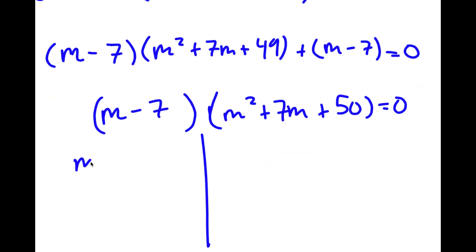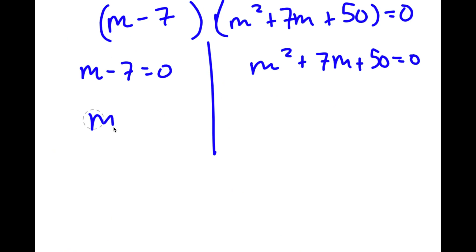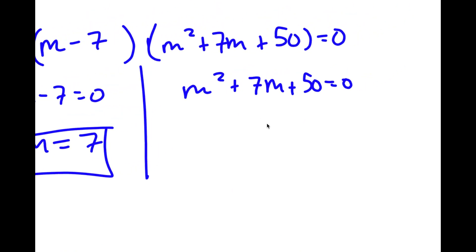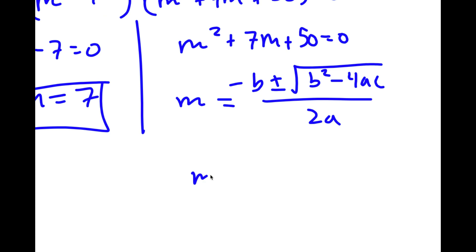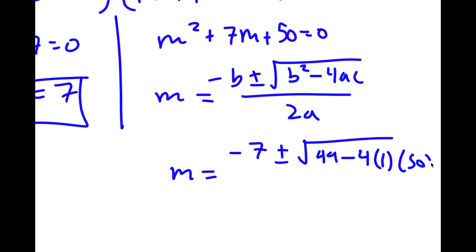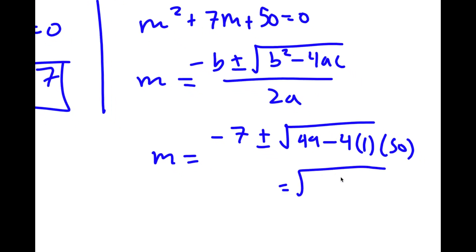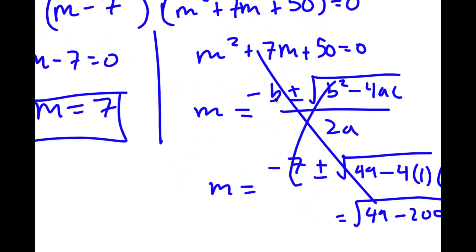Factoring out m minus 7 gives m minus 7 times m squared plus 7m plus 49 plus 1, which equals m minus 7 times m squared plus 7m plus 50, equal to 0. This gives two equations: m minus 7 equals 0, meaning m equals 7, which is one solution. For m squared plus 7m plus 50 equals 0, using the quadratic formula gives the square root of 49 minus 200, which is a negative number, meaning no real solutions. So the only solution is m equals 7.